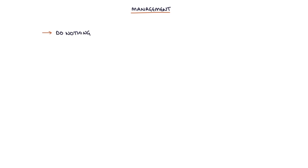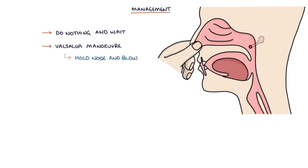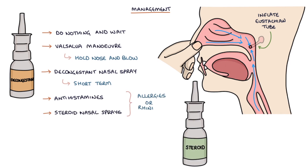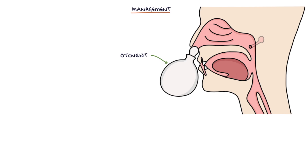Let's talk about management. Treatment options for eustachian tube dysfunction include doing nothing and waiting for spontaneous resolution — likely if the patient is recovering from a viral upper respiratory tract infection. Performing the Valsalva maneuver by holding the nose and blowing into it to inflate the eustachian tube. Using decongestant nasal sprays short term. Antihistamines and steroid nasal sprays may be helpful for allergies or rhinitis. Surgery may be required in severe or persistent cases. The Otovent is an over-the-counter device where the patient blows into a balloon using a single nostril to help inflate the eustachian tube, clear blockages, and equalize pressure in the middle ear.